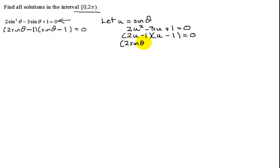So you will land up with (2sinθ - 1) times (sinθ - 1) = 0. So it doesn't matter whether you factor it this way or straight factor it this way. You're going to get the same answer.